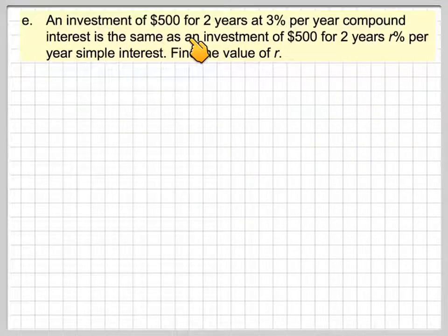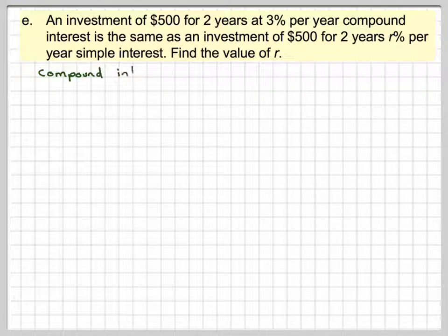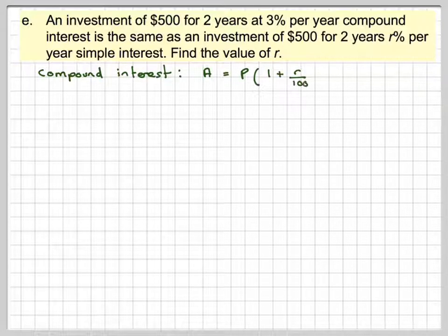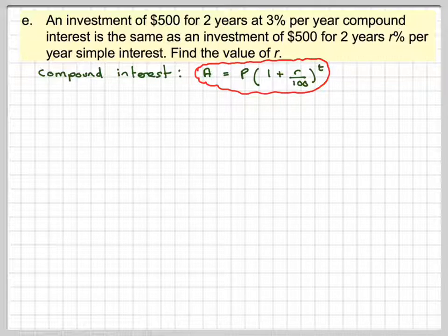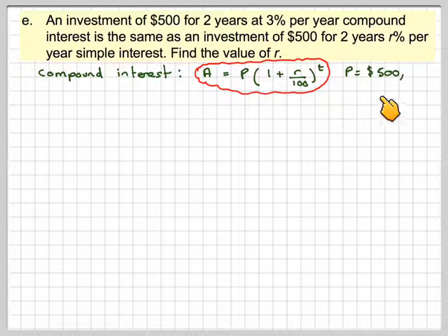An investment of £500 for 2 years at 3% per year compound interest is the same as the investment of £500 for 2 years R% per year simple interest. Find the value of R. So compound interest, A is going to be P times 1 plus R over 100 to the power of T.